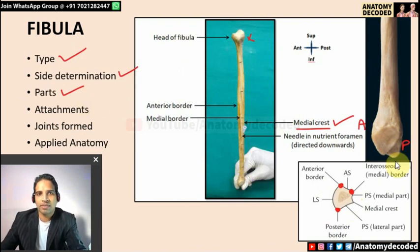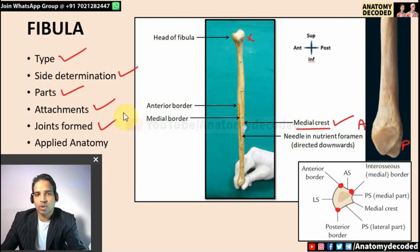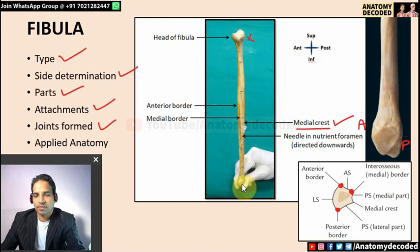The lower end of fibula is the lateral malleolus, with a depression called the malleolar fossa. Attachments of the upper end: biceps femoris muscle and the fibular collateral ligament are attached here. Joints: superior tibiofibular — plain synovial; middle tibiofibular — syndesmosis; inferior tibiofibular — syndesmosis. Fibula also takes part in the ankle joint — tibia, fibula, and talus together form the ankle joint.